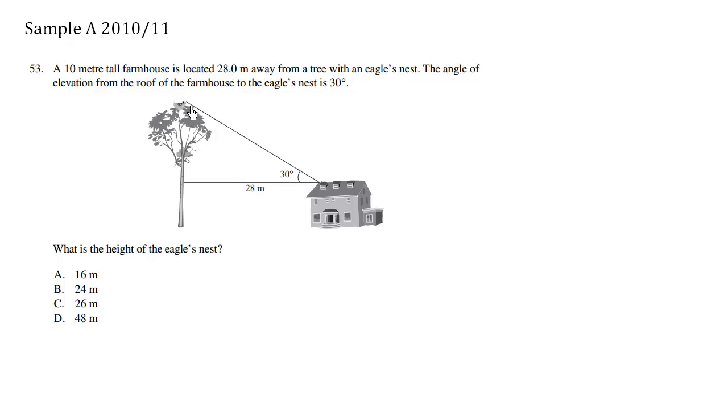So we're trying to solve the height of this triangle plus this height over here. Now we know the height of this part here. This is the height of the house. It says here the house is 10 meters tall. So this is 10 meters but we need to add this 10 meters to this height of the triangle to solve the actual height of the eagle's nest.